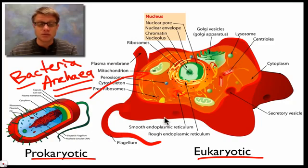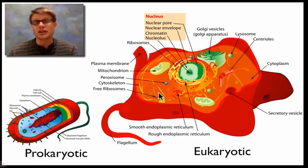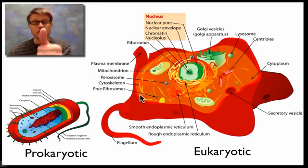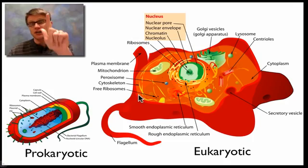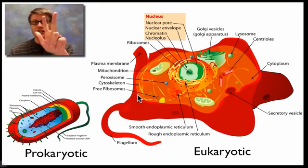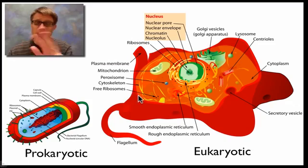But there are some similarities between the two. All cells are going to have nucleic material, so they're going to have DNA. All cells are going to have a cell membrane around the outside, some form of cytosol on the inside, and they're also going to have ribosomes. They may differ, but all cells are going to have those things.